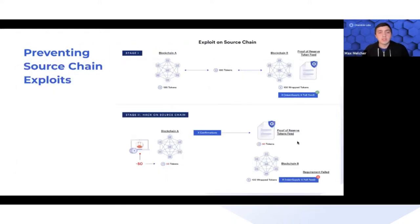What we've seen over the last few years are two main types of attacks: the source chain exploit and the infinite mint. On the source chain exploit, we can use this diagram to understand exactly how this operates and who is affected.